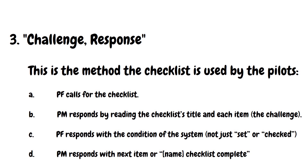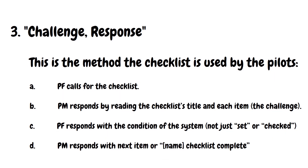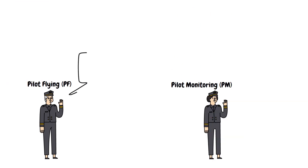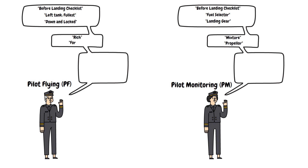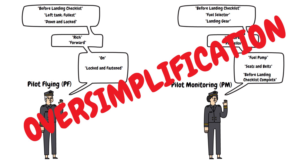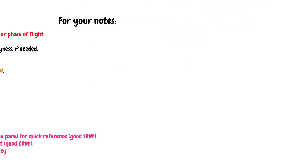Here's an example of what it can look like. The pilot flying calls: 'Before landing checklist.' Pilot monitoring: 'Before landing checklist. Fuel selector.' Pilot flying: 'Both tanks.' Pilot monitoring: 'Undercarriage.' Pilot flying: 'Down and locked.' And so on through mixture, propeller, fuel pump, and seatbelt items until the pilot monitoring calls 'Before landing checklist complete.' Of course, this is an oversimplified explanation of how checklists work in a crew — there are exceptions, especially during abnormal or emergency procedures. More on general aviation CRM will be covered in another video.